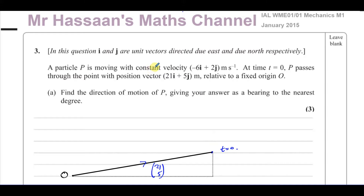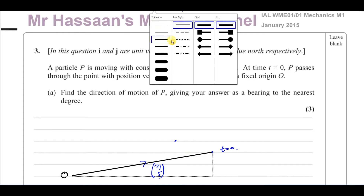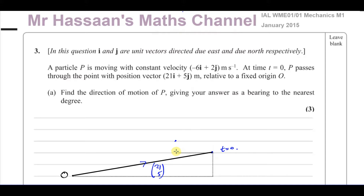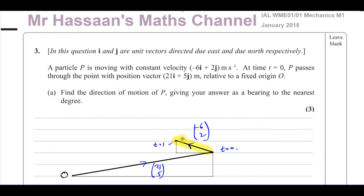The particle is moving with constant velocity minus 6i plus 2j. So from its starting point, it's going to move 6 to the left and 2 up every second. After one second it's over here, after two seconds over here, and so on — moving along this line. This velocity vector describes the direction and the distance it moves every second. This is the vector we need to use in order to find the direction of motion of P. We concentrate on that: minus 6 horizontally and 2 vertically.